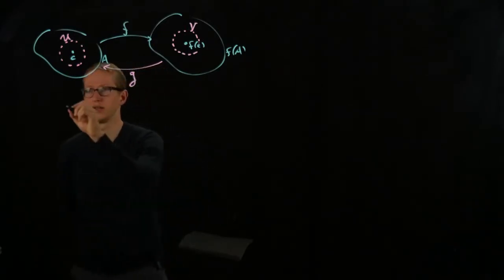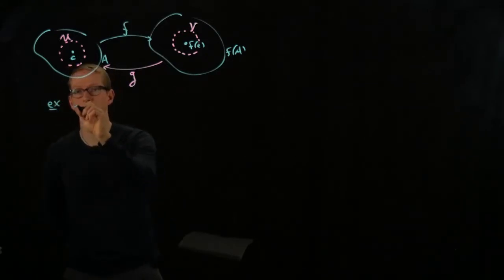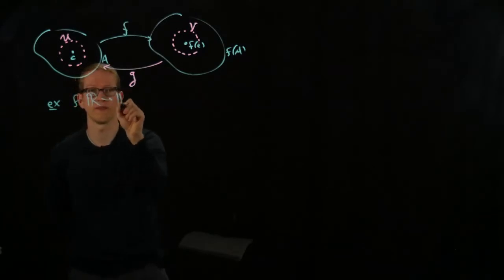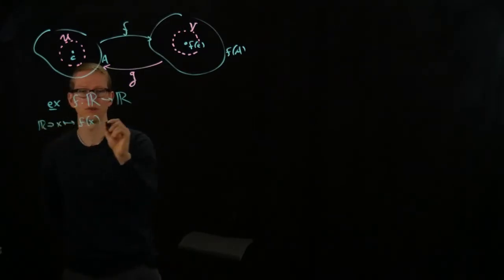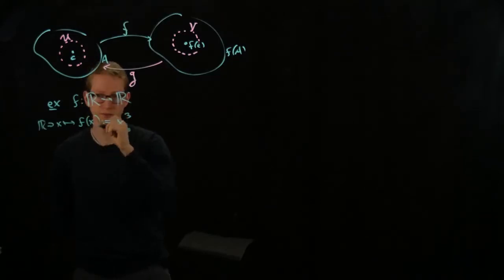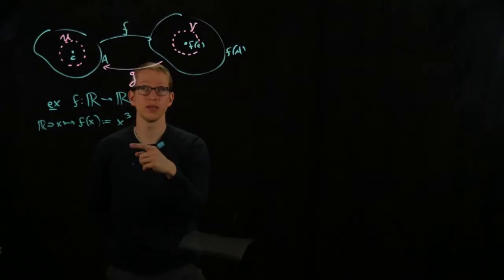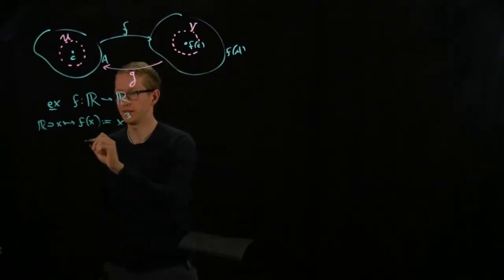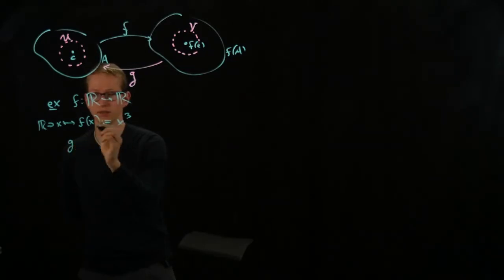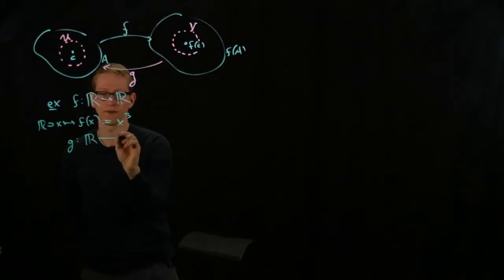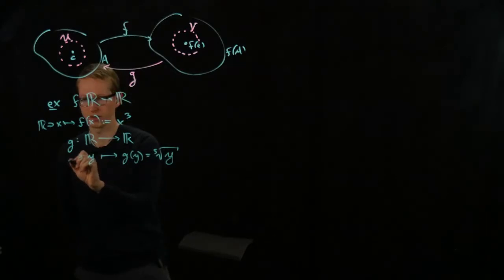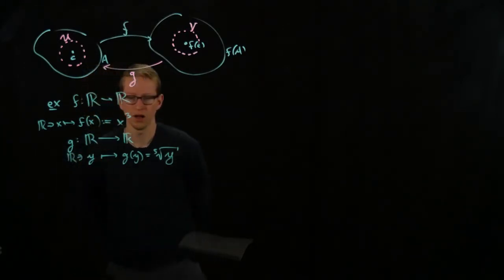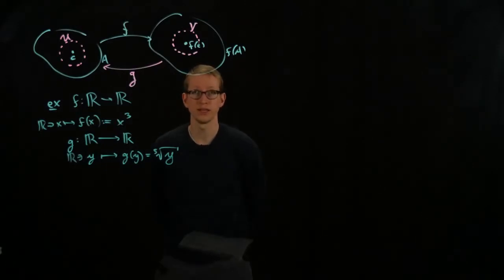And the following function gives an example for where that fails, even in R, even in functions of a real variable. So, this example is if f of x gets mapped to x cubed, then we know that this function is differentiable, it's one-to-one, it's onto, but the inverse function, which also exists because of the fact that this is one-to-one and onto, defined by sending the element y to the cube root of y, this function, although it exists and it's continuous, it's not differentiable at 0.